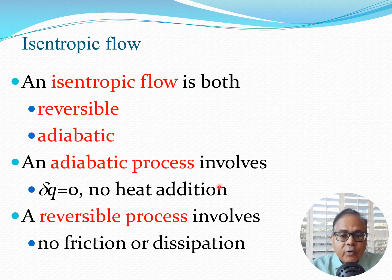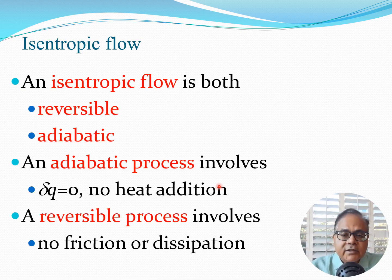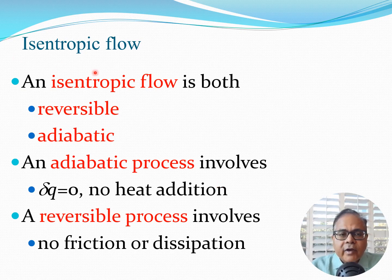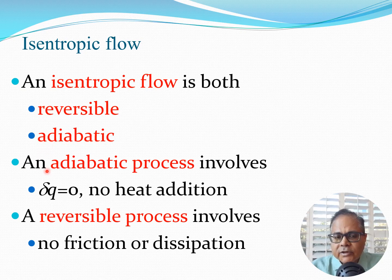At high speed, flow is compressible — meaning applying pressure causes the fluid to move (the displacement s we mentioned). Now we come to the important concept: isentropic flow, the title of this lecture. An isentropic flow is both reversible and adiabatic. An adiabatic process means no heat exchange, so δq = 0 mathematically. A reversible process means no friction or dissipation.